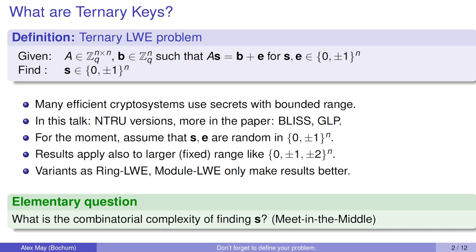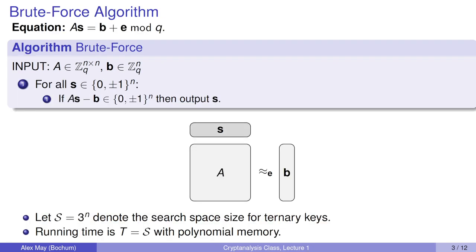Before I start with the meet-in-the-middle algorithm, let us address the most simple algorithm, namely the brute-force algorithm. Here we start with the LWE equation A times S is B plus E. Now we search in the first step for all ternary S. We check whether A times S minus B is actually again a ternary error vector, and in this case we output S. Graphically that means we are looking among the columns of A for a ternary linear combination denoted by S, which matches the target vector B up to some error vector E. If we denote the search space size for our ternary keys by capital S, which is 3 to the n, then the running time is 3 to the n with polynomial memory.